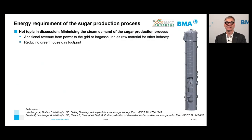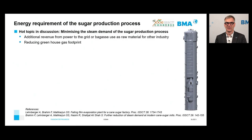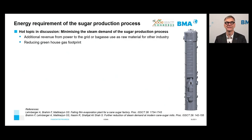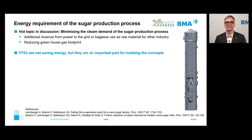The next topic is the energy requirement of the sugar production process — a hot topic in current discussion. We aim to minimize steam demand for sugar production: on one side to generate additional revenue from power sales or bagasse as a raw material, and on the other to reduce the greenhouse gas footprint for a more sustainable world. It must be stated that Falling Film Evaporators do not save energy by themselves, but they are an important part of realizing energy-efficient concepts.